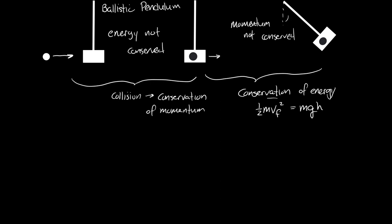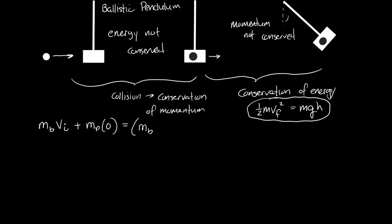So energy is not conserved during the inelastic collision, and momentum is not conserved during the swing. The momentum problem: before the collision it's mass of the ball times initial velocity of the ball — the only thing moving. Mass of the pendulum has velocity zero. After the collision it's mass of the ball plus mass of the pendulum times their final velocity.